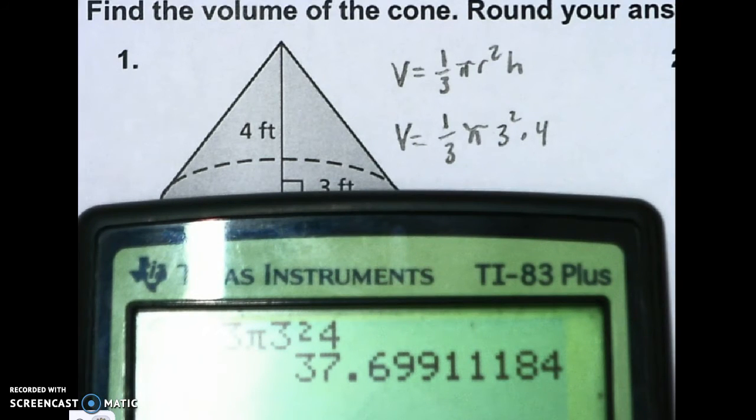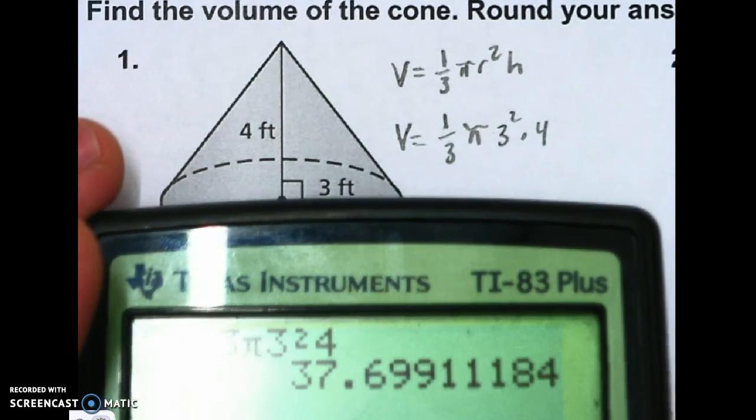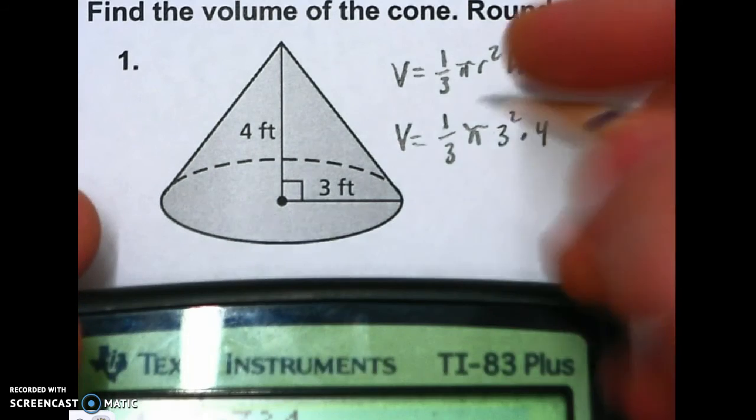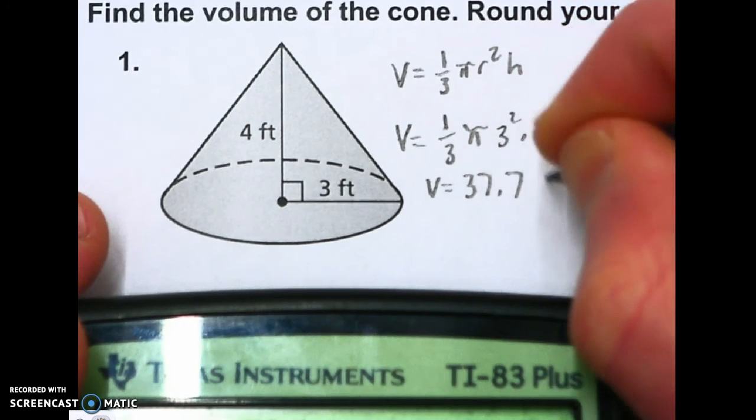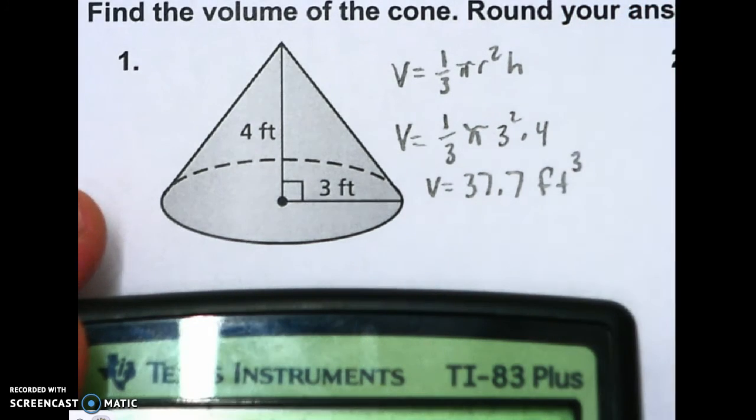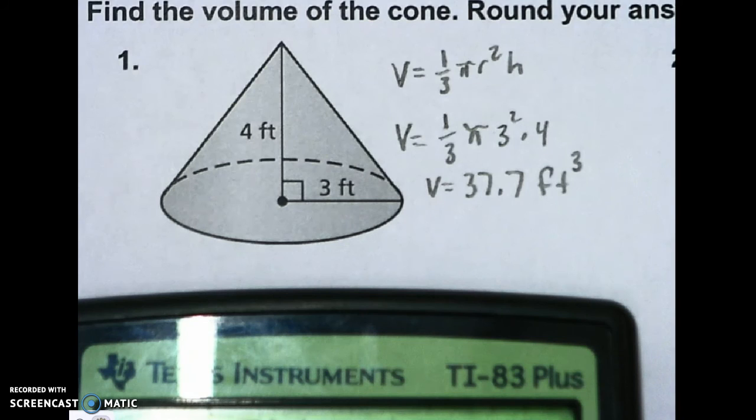So it's about 37.7 feet cubed. Southwest 212. We just did some math.